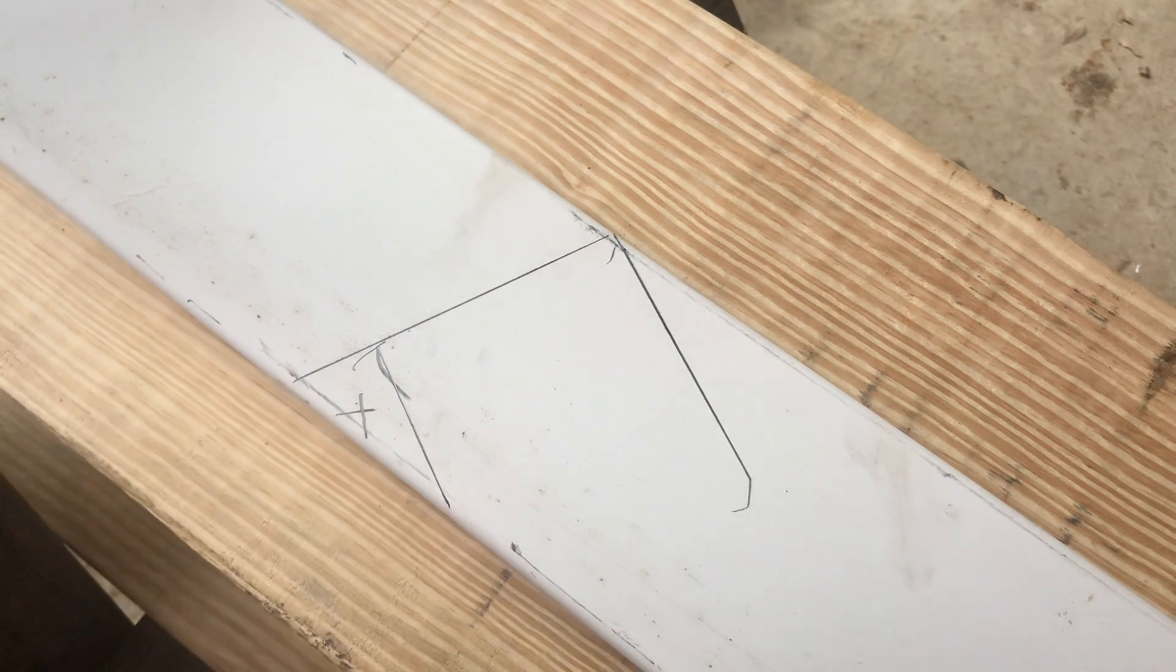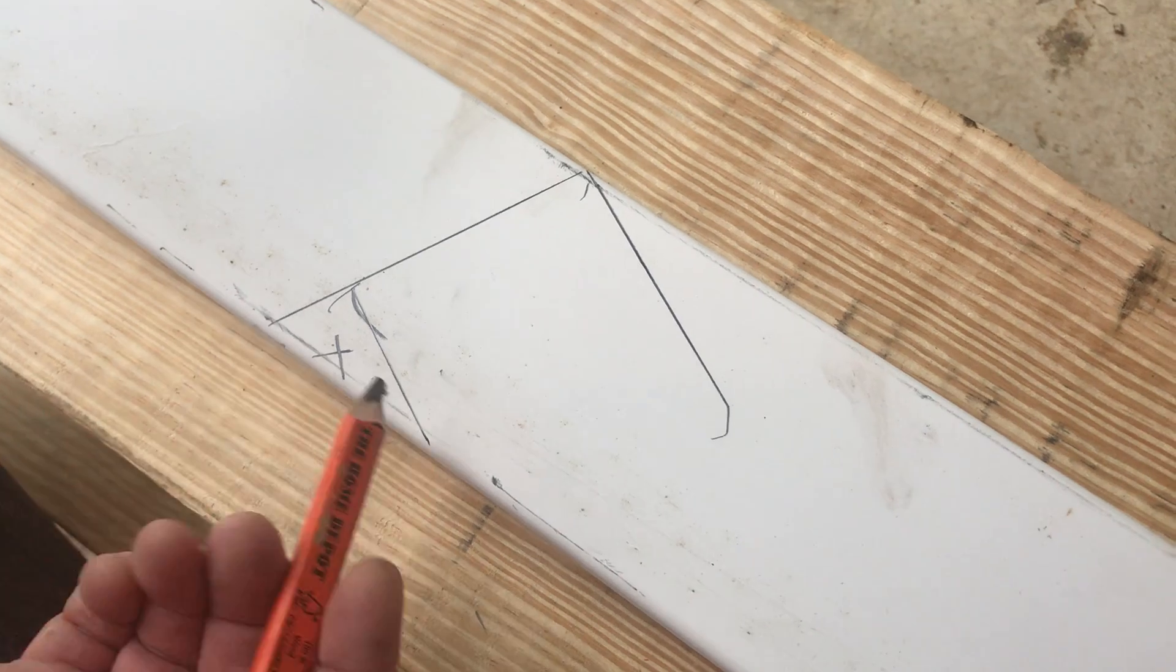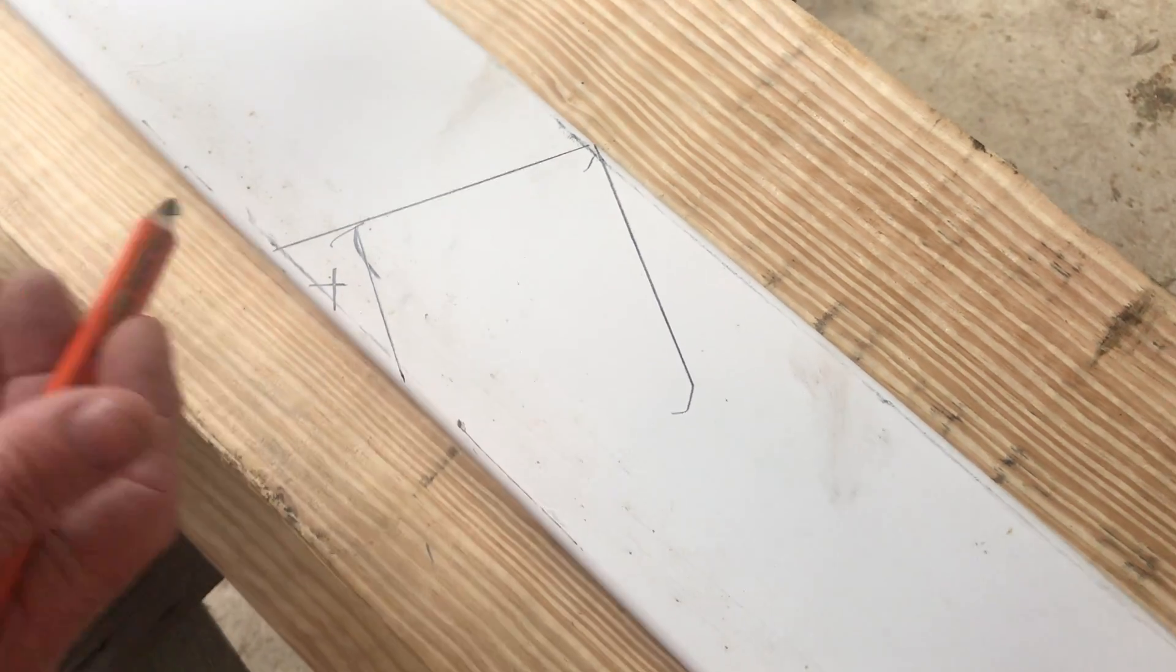So this comes off. That's cut out. That's where the wall, this is where the rafter sits on the wall.